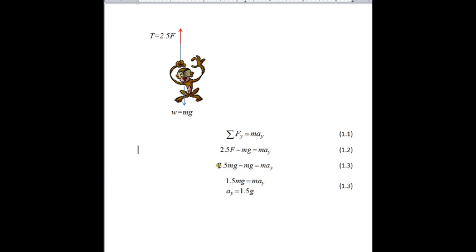So if we substitute F equals mg into this relationship, 2.5mg minus mg gives us 1.5mg, and that's equal to mass times acceleration. So we find out it doesn't matter how fat the monkey is, the acceleration that the passenger will experience will be exactly 1.5 times the acceleration due to gravity.